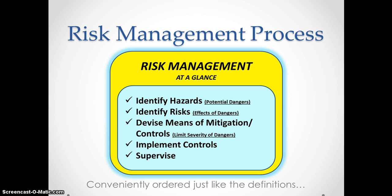Understanding these terms, here is the five-step risk management process generally accepted in the risk management world. First, identify your hazards and compile a list. Second, come up with your list of risks — reasonably anticipated results from the hazards. Third, devise means of mitigation and come up with controls. Fourth, implement the controls. And fifth, supervise.